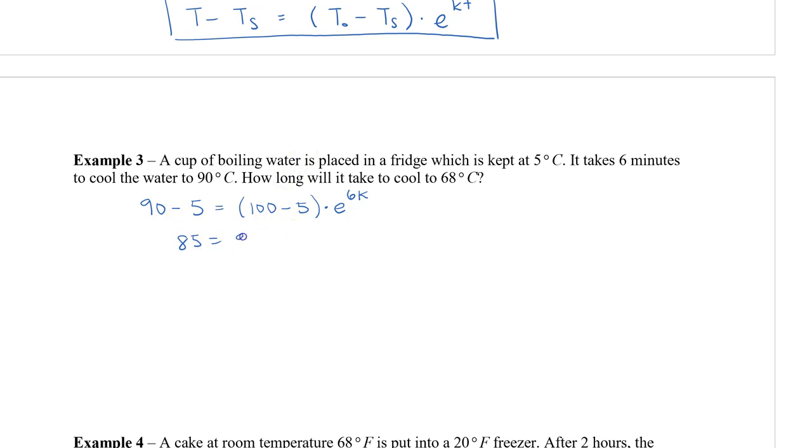Simplifying this, we get 85 over 95 equals e to the 6k. Remember to bring the variable down to the front. We're going to take the natural log of both sides. And then we have that this is going to equal 1. So k is equal to the natural log of 85 divided by 95 all over 6.